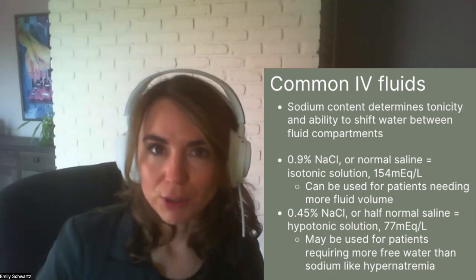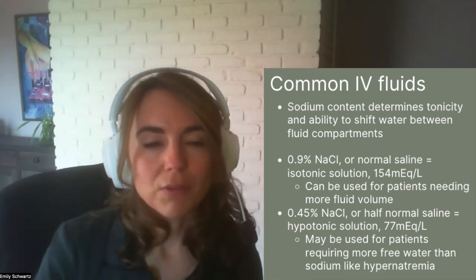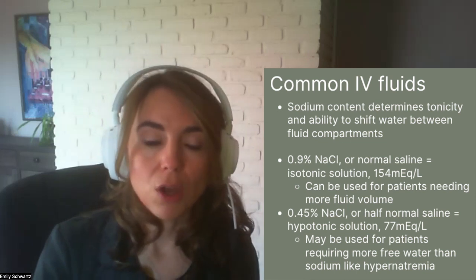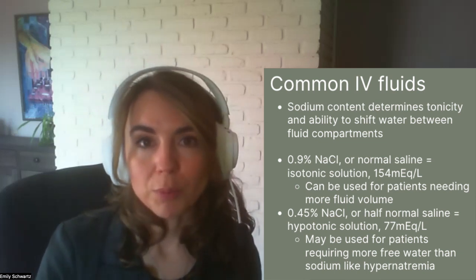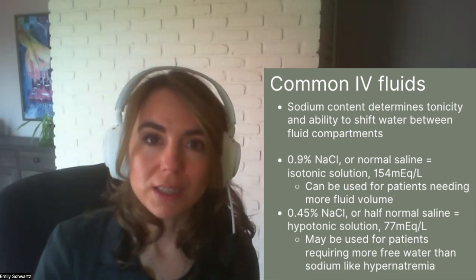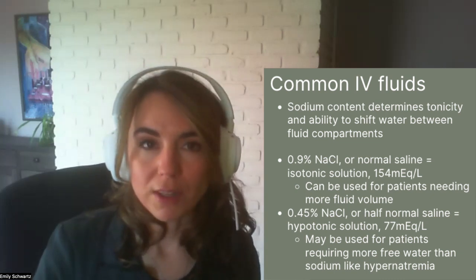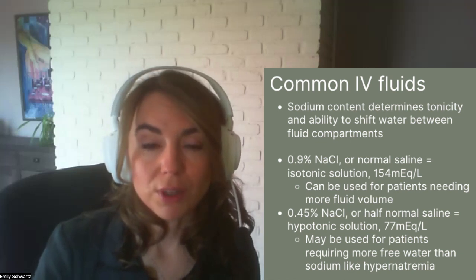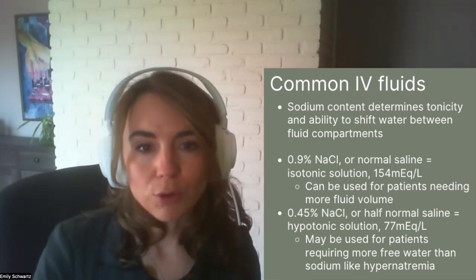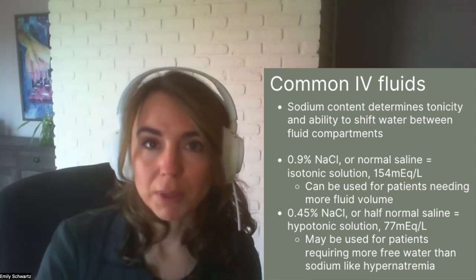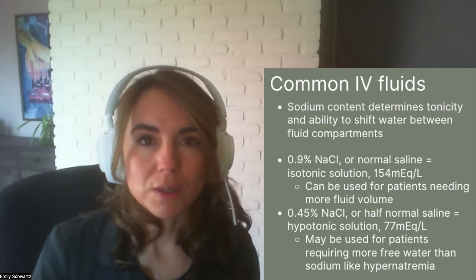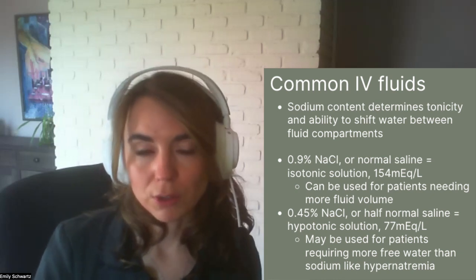Let's talk about some of the most common IV fluids we see in clinical practice. Fluids in the hospital are classified chiefly by their sodium content, which determines their tonicity — their ability to shift water between the fluid compartments. The most common fluid is what's known as normal saline or 0.9% sodium chloride. This is an isotonic fluid, the same tonicity as the bloodstream, with a sodium concentration of 154 milliequivalents per liter. This is the fluid we use when the patient simply needs more volume.